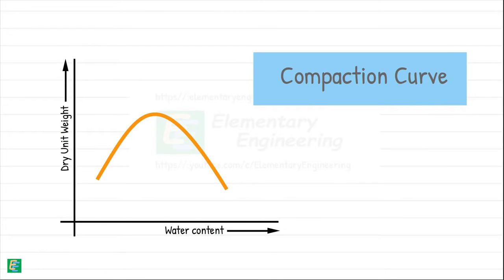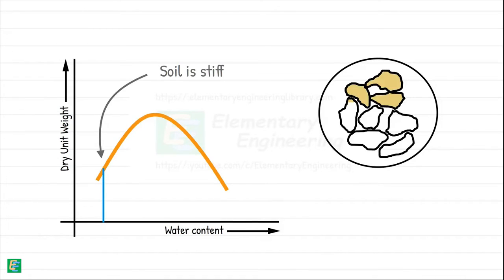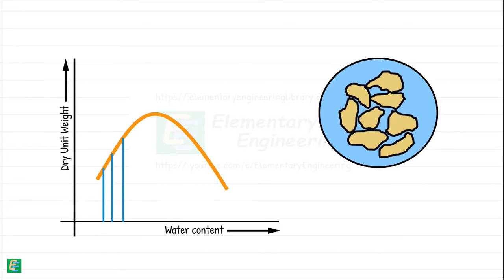The relationship observed between the dry density of soil and water content present was explained by a lubrication theory. At low water content, the soil is stiff and soil grains offer more resistance to compaction. As the water content is increased, water acts as a lubricating agent and helps particles move more easily to achieve denser configuration. This way, dry density of soil begins increasing.